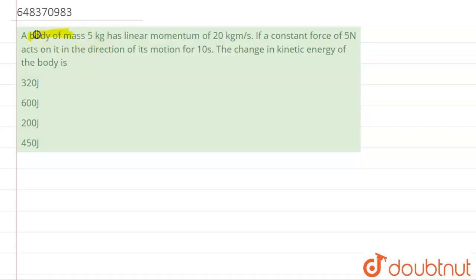The question says that a body of mass 5 kilograms has a linear momentum of 20 kilogram meter per second. If a constant force of 5 newtons acts on it in the direction of its motion for 10 seconds, then the change in kinetic energy of the body is... Firstly, we have to find initial velocity.